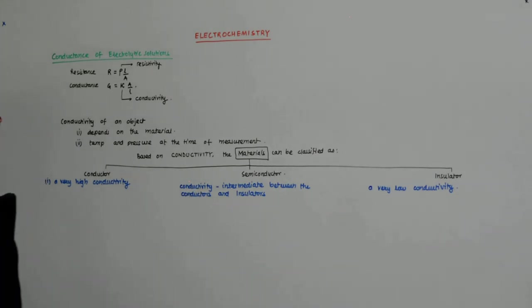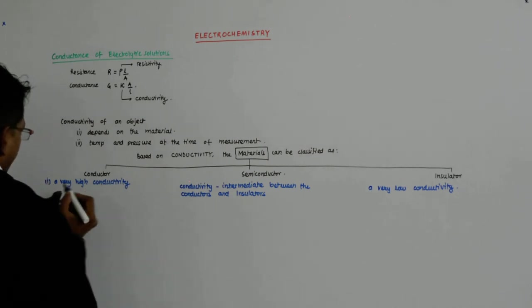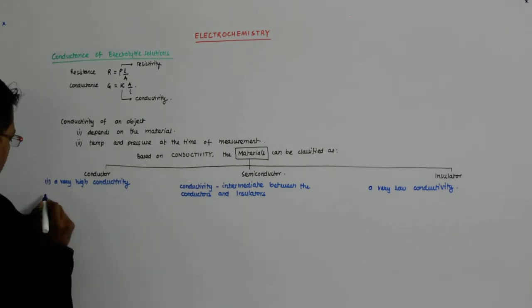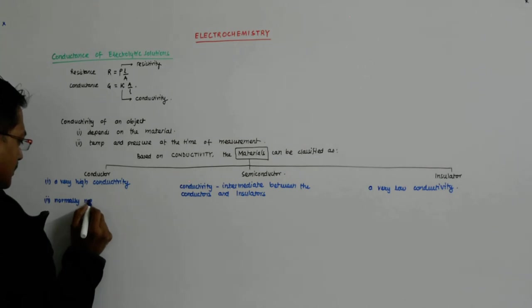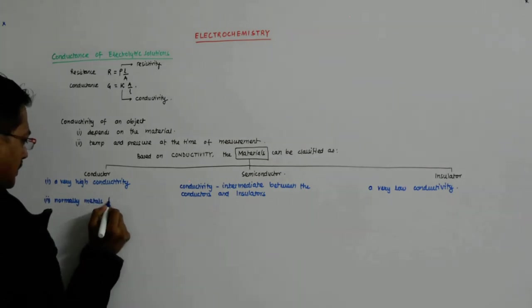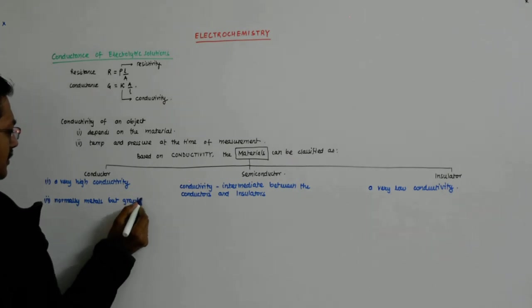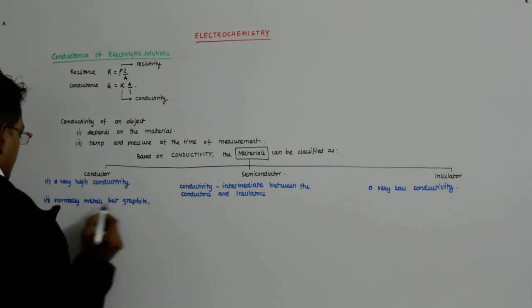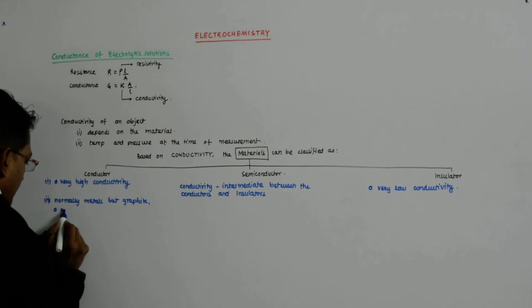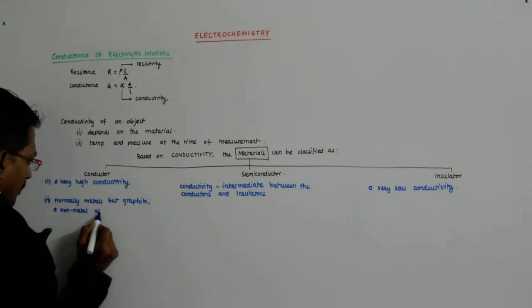So this we already know. Conductors are normally metals, but graphite which is a non-metal also conducts.